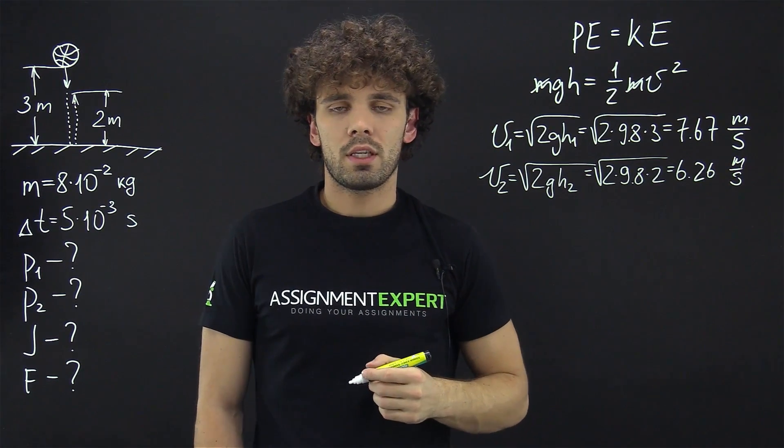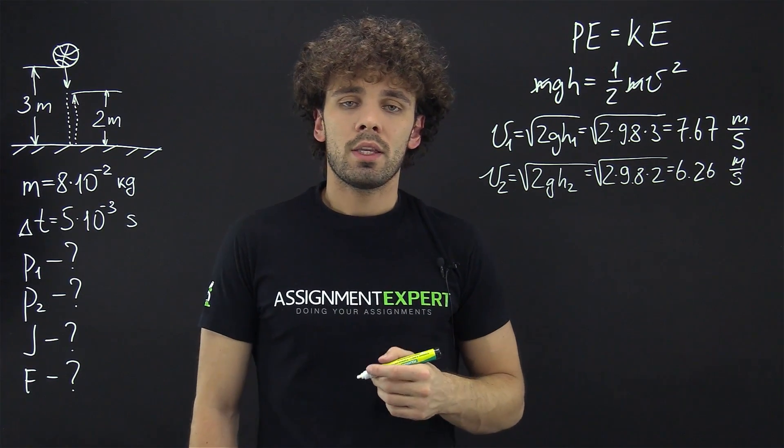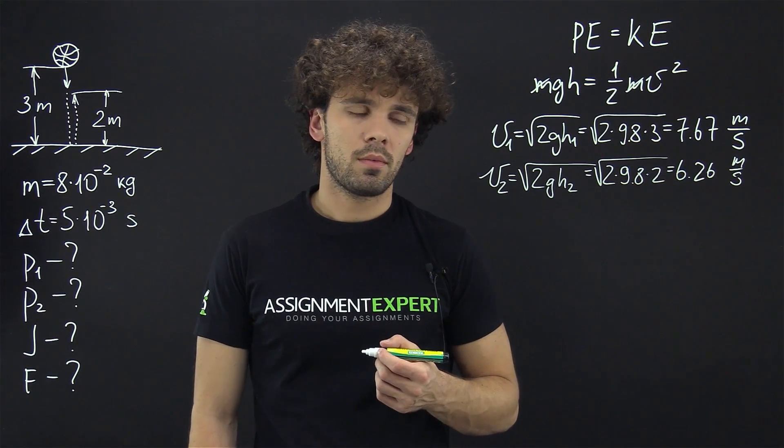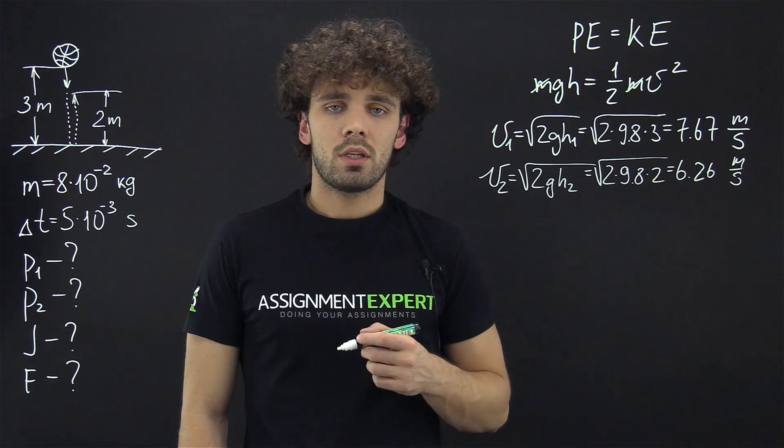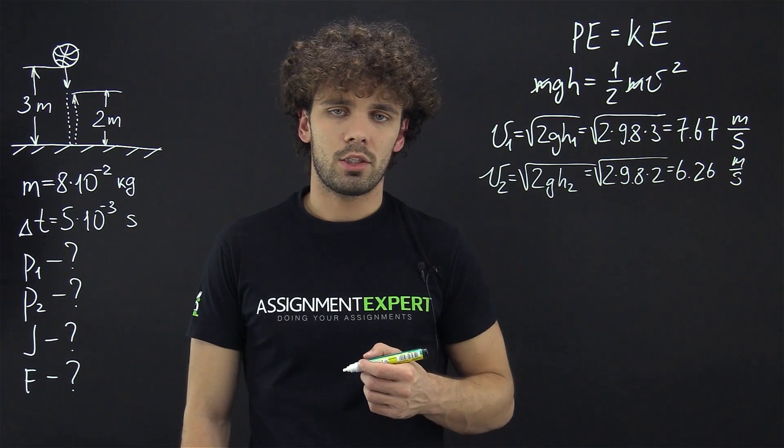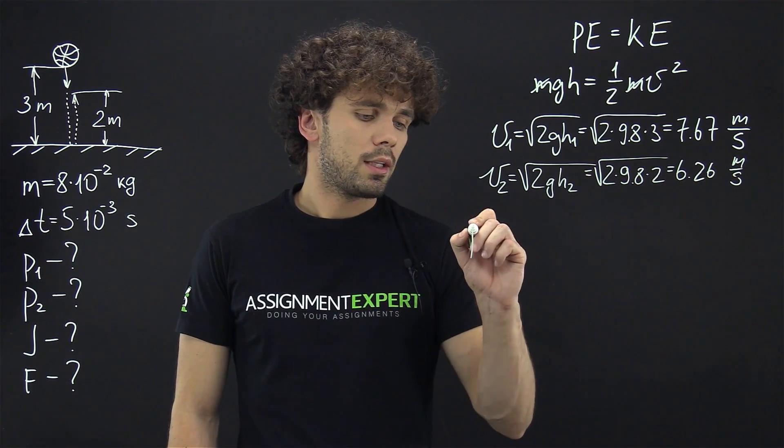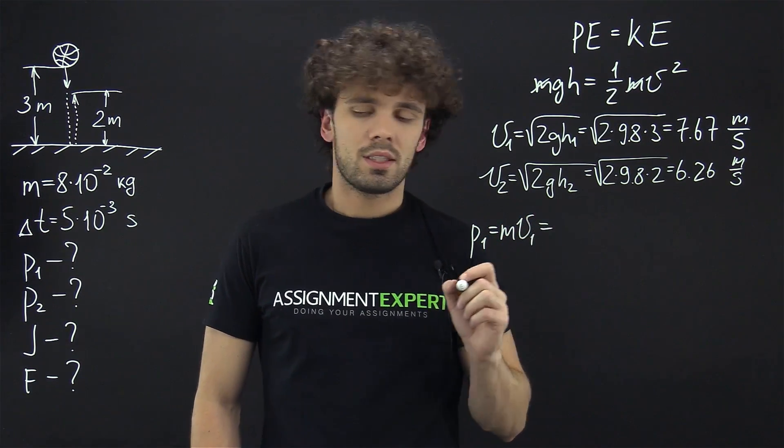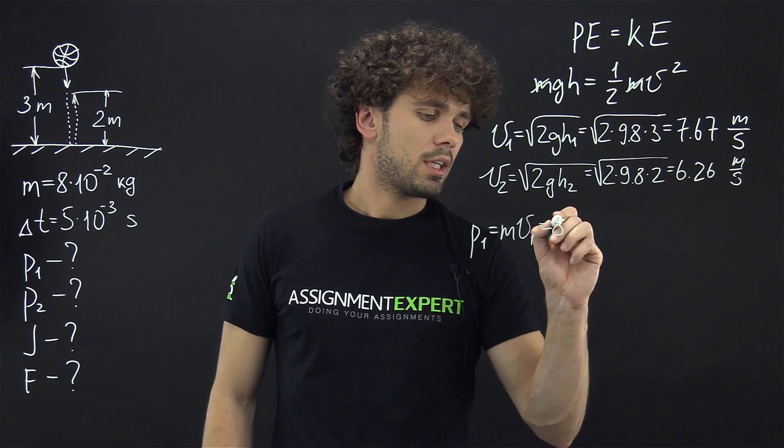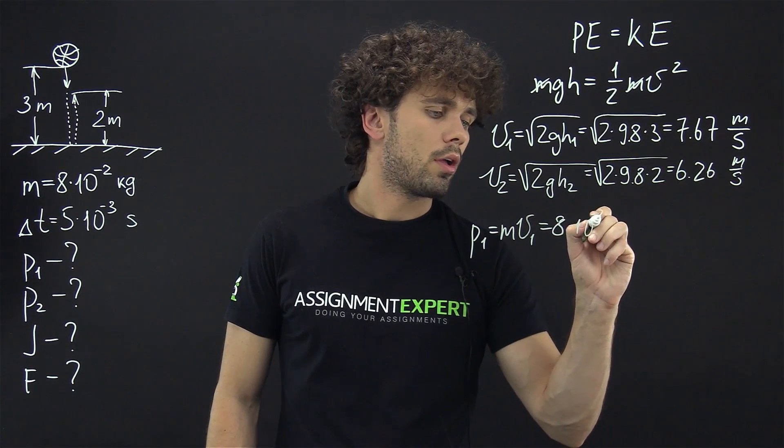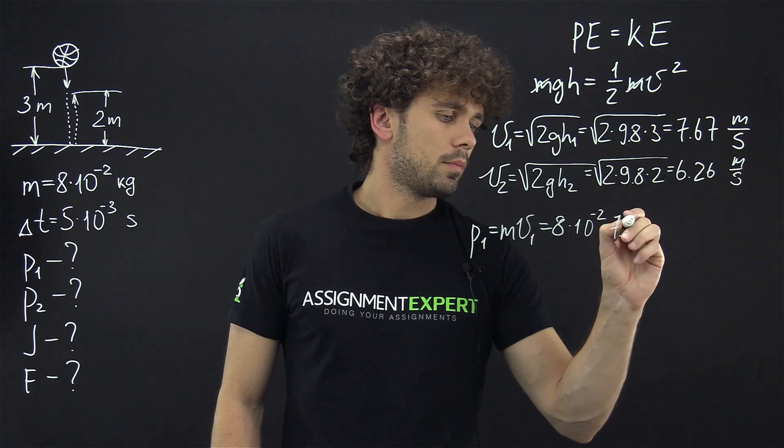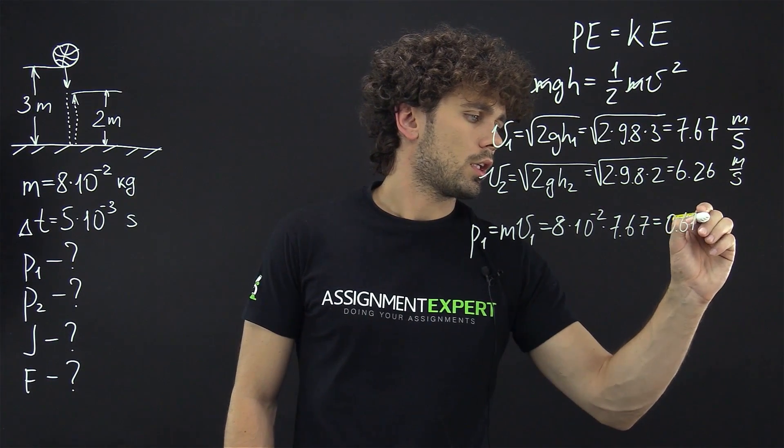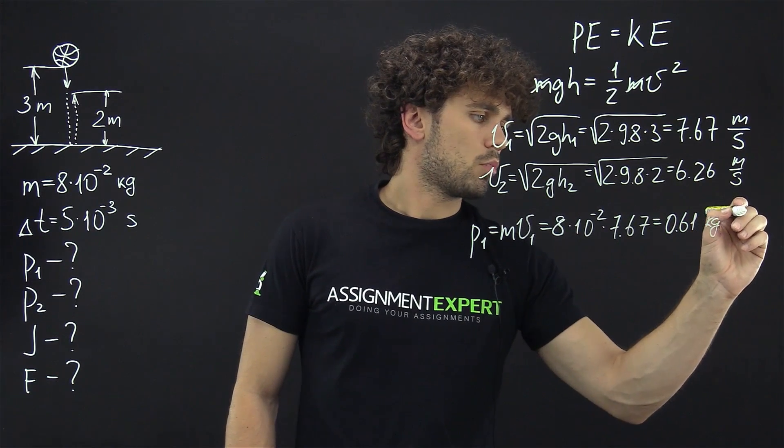Now as we know the velocities of the ball before and after the collision, let's recall that momentum is actually the product of a mass of an object and its velocity. So using these two velocities we can find momentum of the ball before and after the collision. Momentum before the collision p1 equals m times v1 and this is equal to 8 times 10 raised to the negative second power times 7.67 and we get 0.61 kilograms times meter per second.